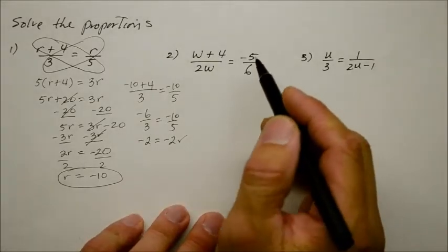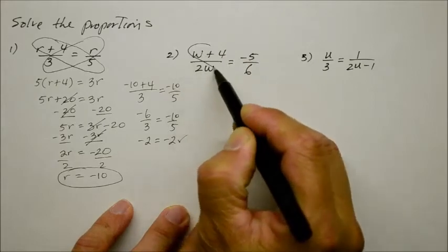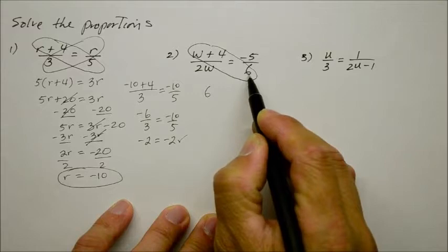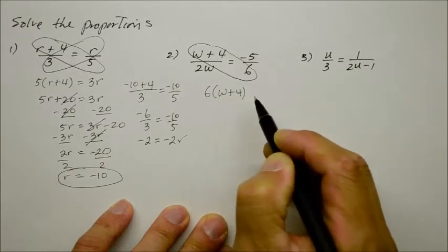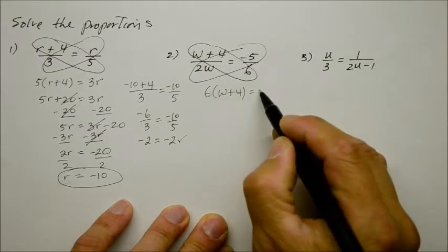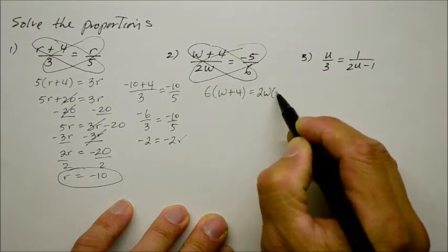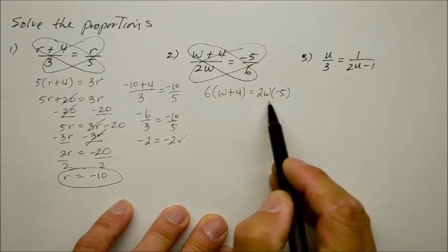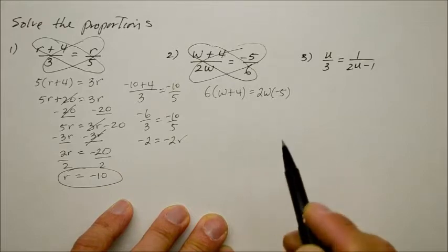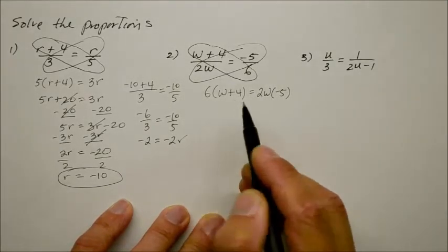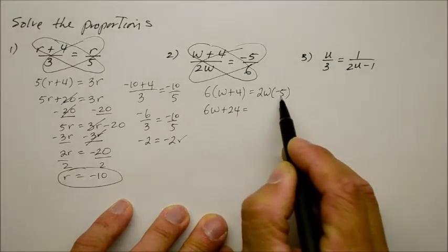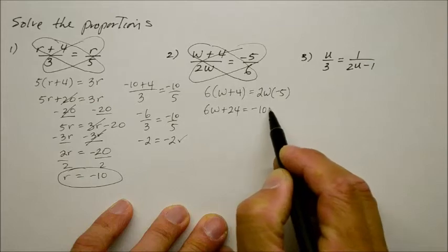Alright! So you said, well I like what you did so I'll go ahead and cross multiply as well. So here you get 6 times the quantity w plus 4. And that equals what you get on the right side when you cross multiply this way, 2w times negative 5. Now if you had that switched around, it really doesn't matter. The commutative property says you get the same product. However, we do have to do the distributive property. So you get 6w plus 24. And on the right side, 2 times negative 5 is negative 10w.